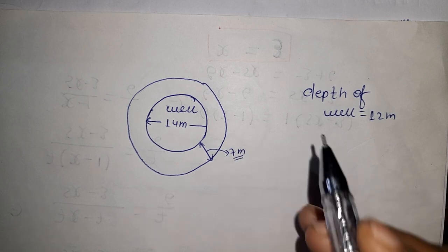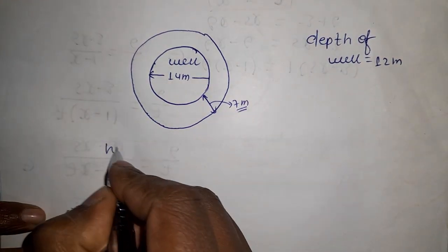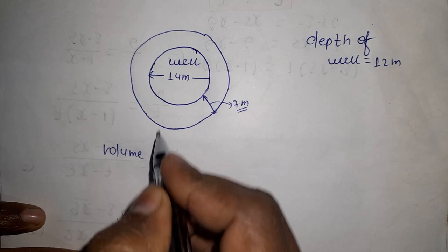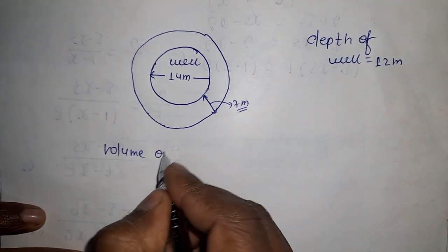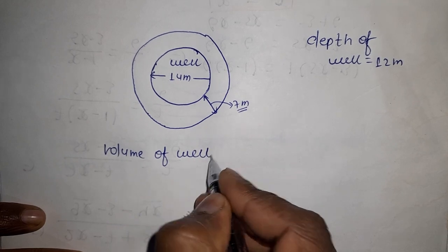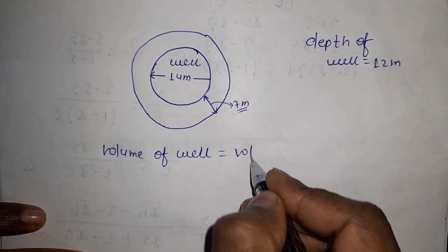Volume of the inner part of the well equals volume of earth dug out.